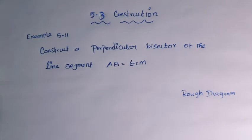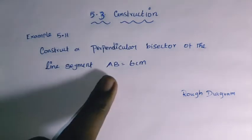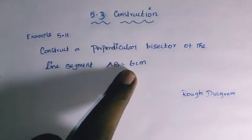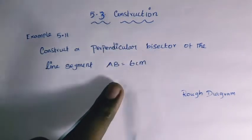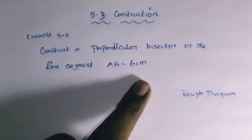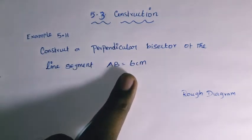This is Exercise 5.3 on practical geometry - the perpendicular bisector. Example 5.11: Construct a perpendicular bisector of the line segment AB equal to 6 centimeters. Perpendicular means 90 degrees. A bisector divides into two parts, so 6 centimeters divided into two parts is 3 centimeters each.